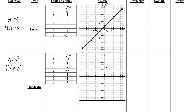For negative values: negative 1 squared — in brackets, negative 1 times negative 1 — always gives you a positive, so positive 1. Negative 2 squared is positive 4. Negative 3 squared is 9. This is nothing new. We have symmetry about the y-axis with this parent function, and we join all the dots from those key points. That's f of x equals x squared, with f of x on the y-axis. We'll list the properties, domain, and range later in the video.